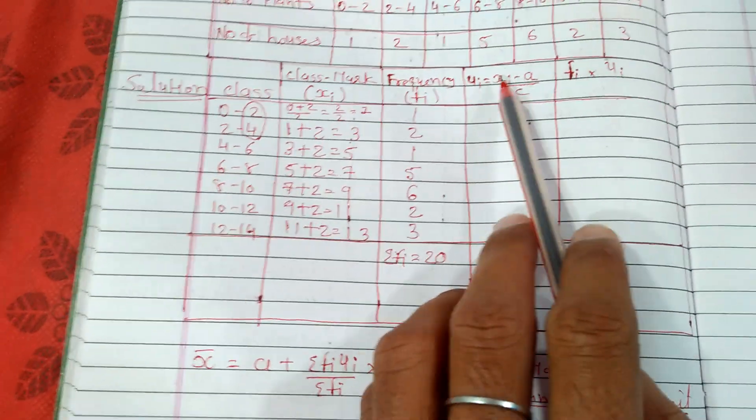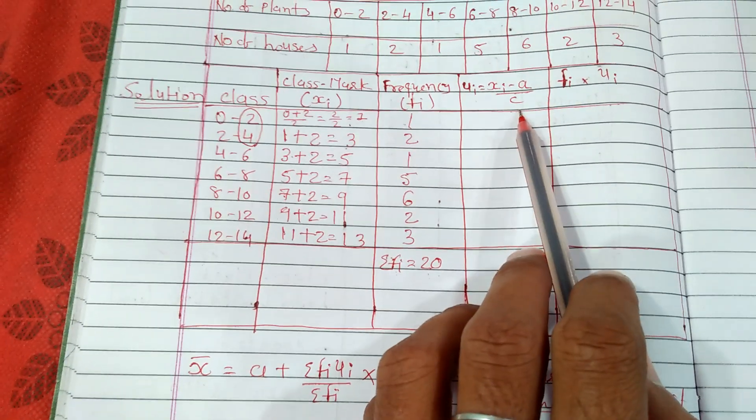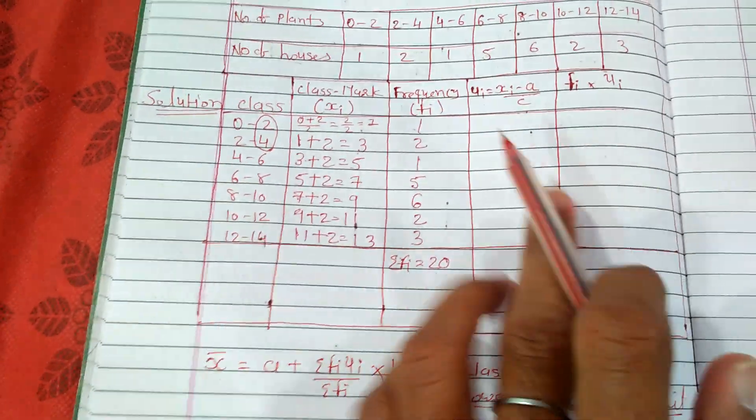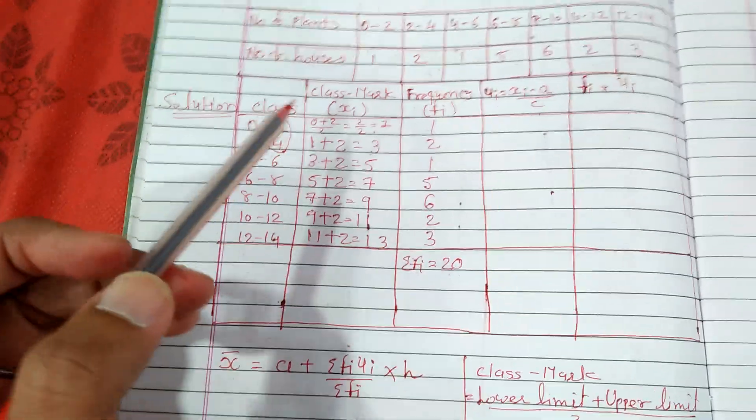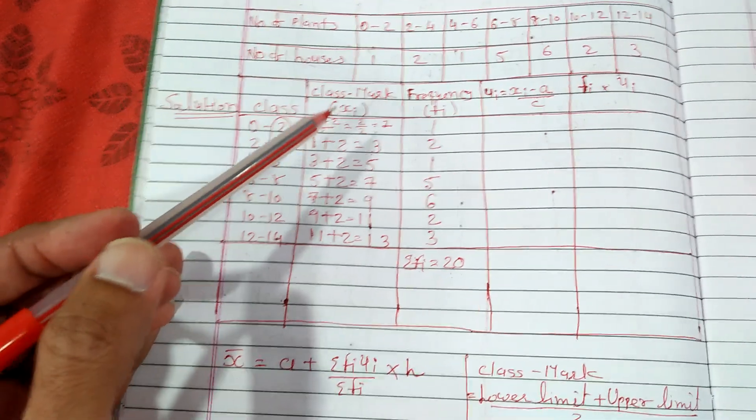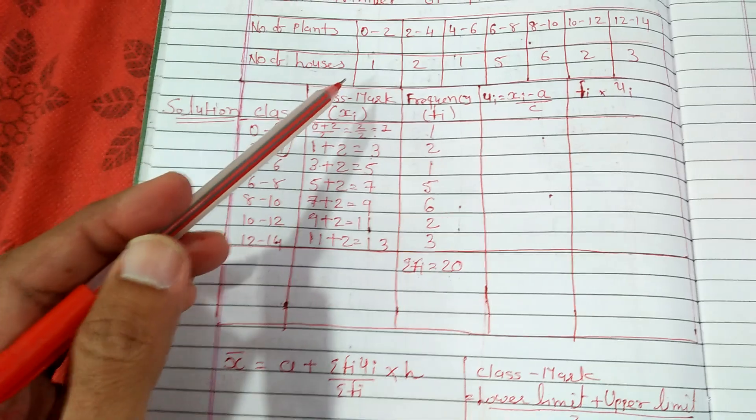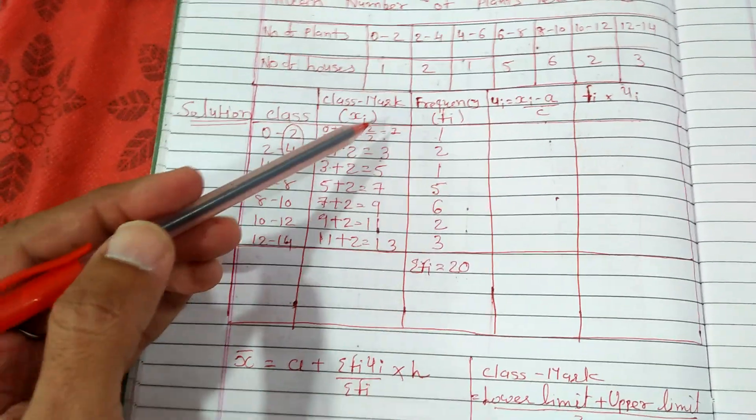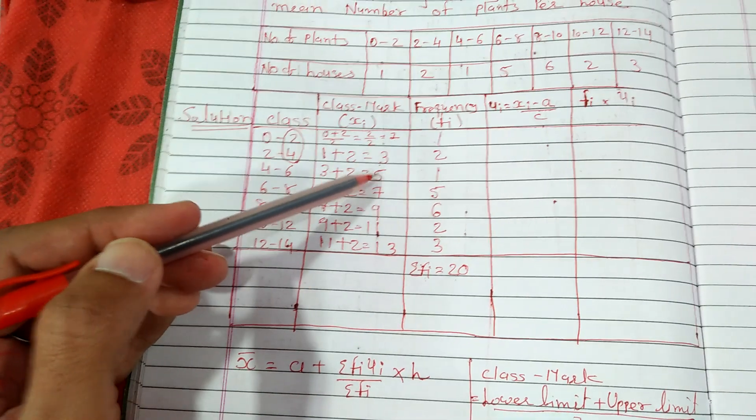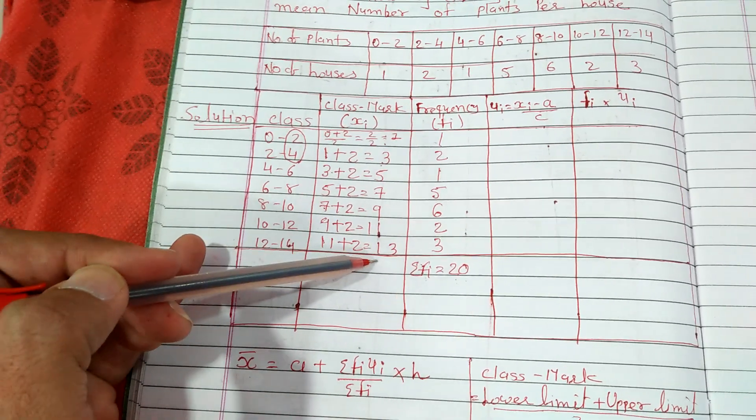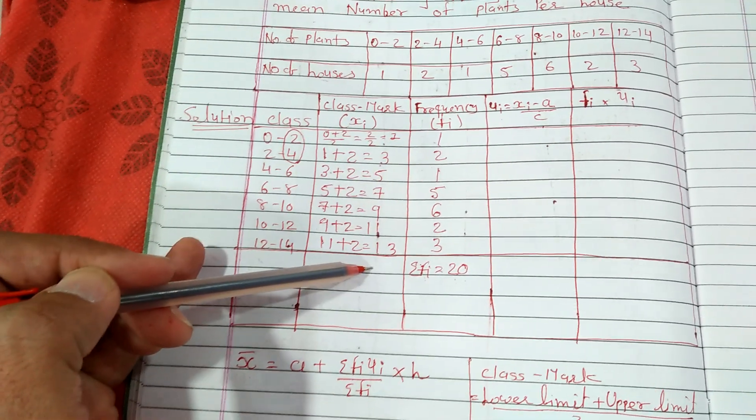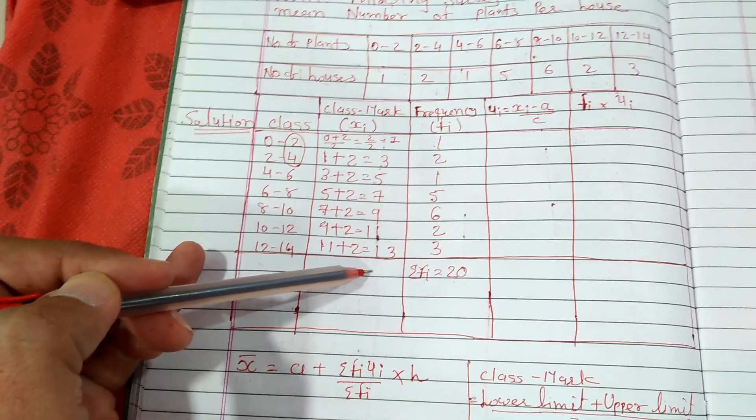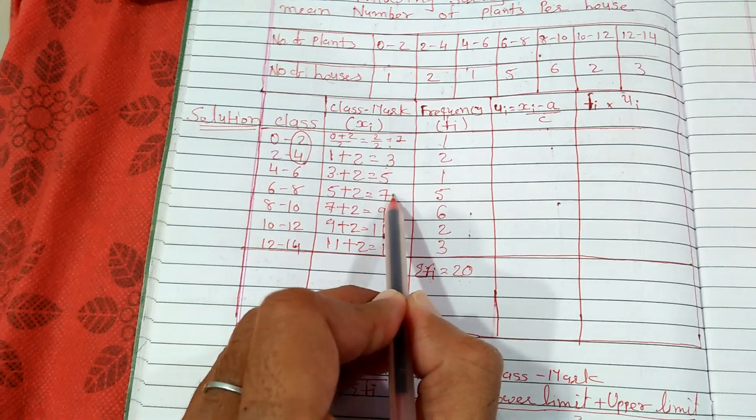Let ui equals xi minus a upon c. In this column, first of all we'll find out the center or middle observation of this class mark. So let us find out how many class marks we have: one, two, three, four, five, six, seven. We have seven class marks, so which one will be the middle one? This 7.